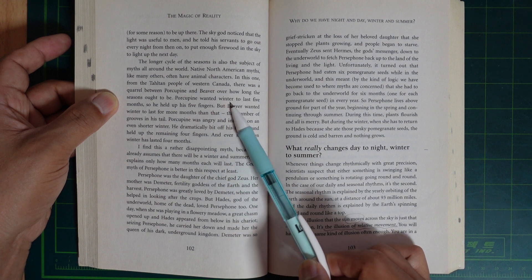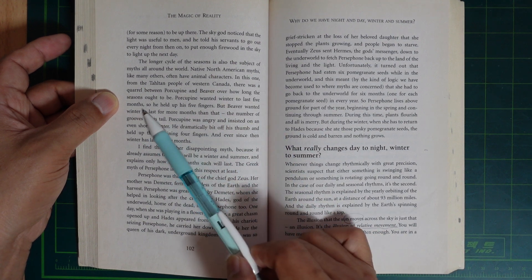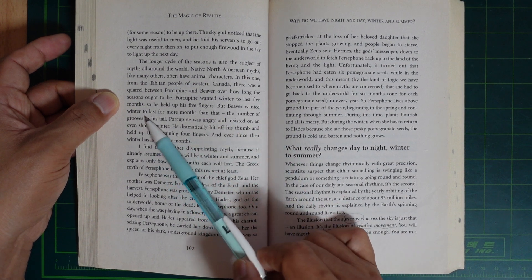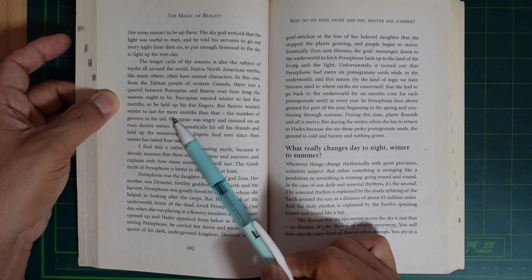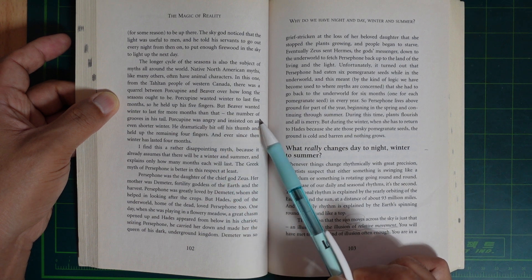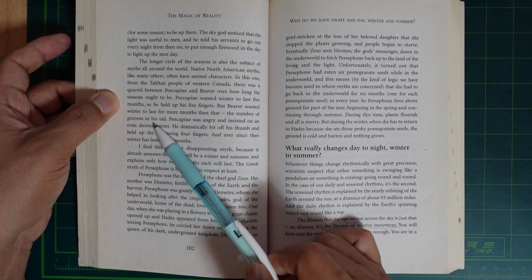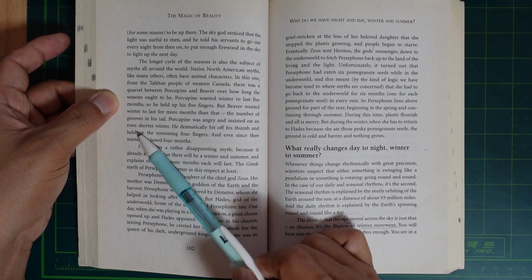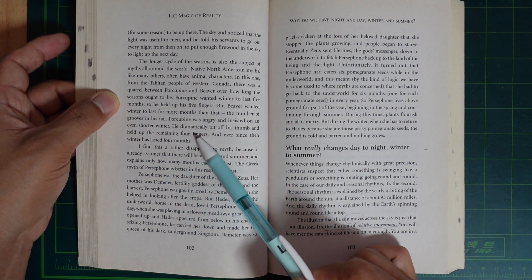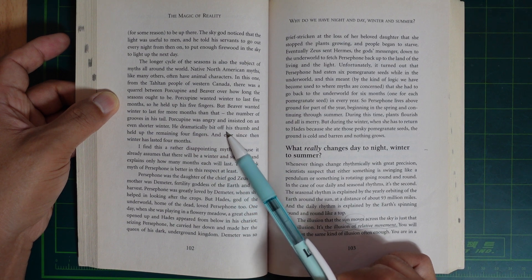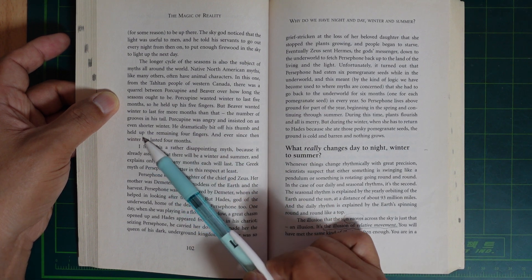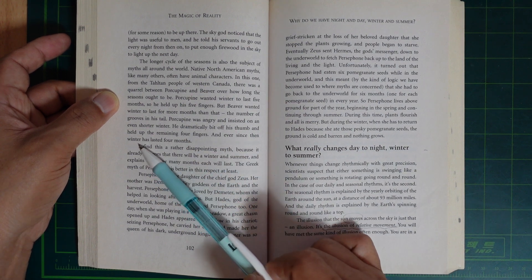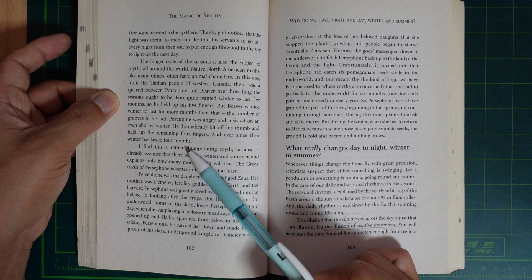Porcupine wanted winter to last five months, so he held up his five fingers. But Beaver wanted winter to last for more months than that, the number of grooves in his tail. Porcupine was angry and insisted on an even shorter winter. He dramatically bit off his thumb and held up the remaining four fingers. And ever since then winter has lasted four months.